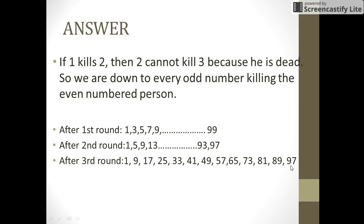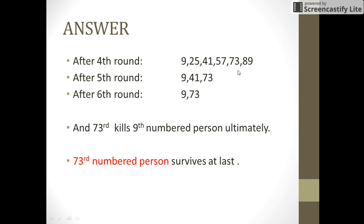In the next round this 97 numbered person would kill 1 and pass the sword to 9 and so on the process continues and we get the survivors after 4th round as 9, 25, 41, 57, 73 and 89.